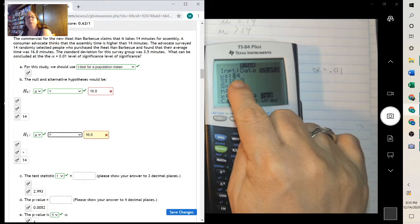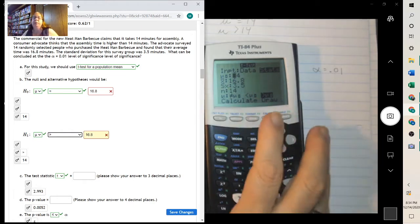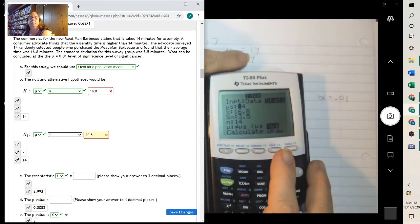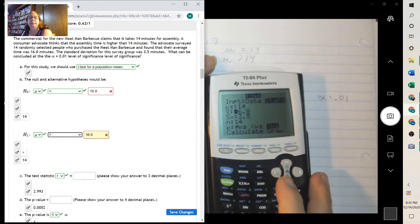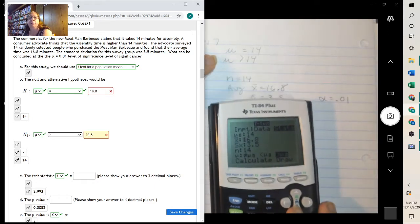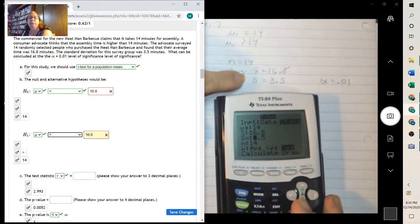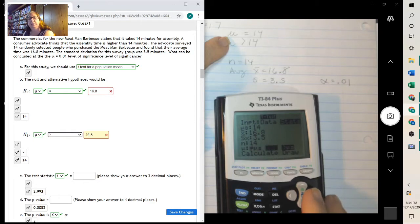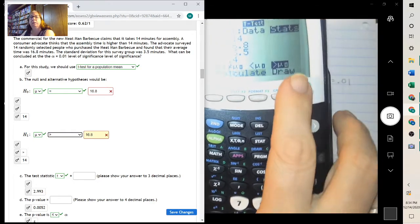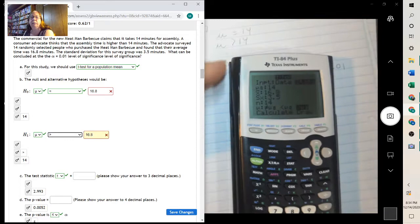Our mean was 14. That came from the null hypothesis. The sample they got was 16.8 mean and a 3.5 standard deviation, and the sample size was 14. And then we're testing greater than. And then we just calculate.